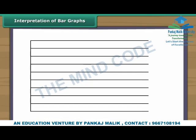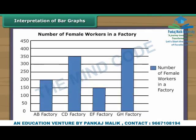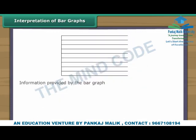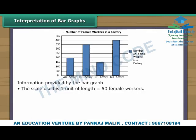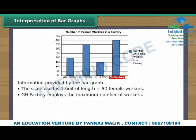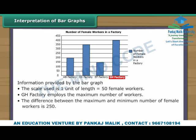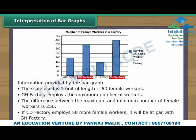Let us interpret one more bar graph. This is a vertical bar graph showing details of female workers in a factory. The scale used is 1 unit of length equal to 50 female workers. GH factory employs the maximum number of workers. The difference between the maximum and minimum number of female workers is 250. If CD factory employs 50 more female workers, it will be at par with GH factory.